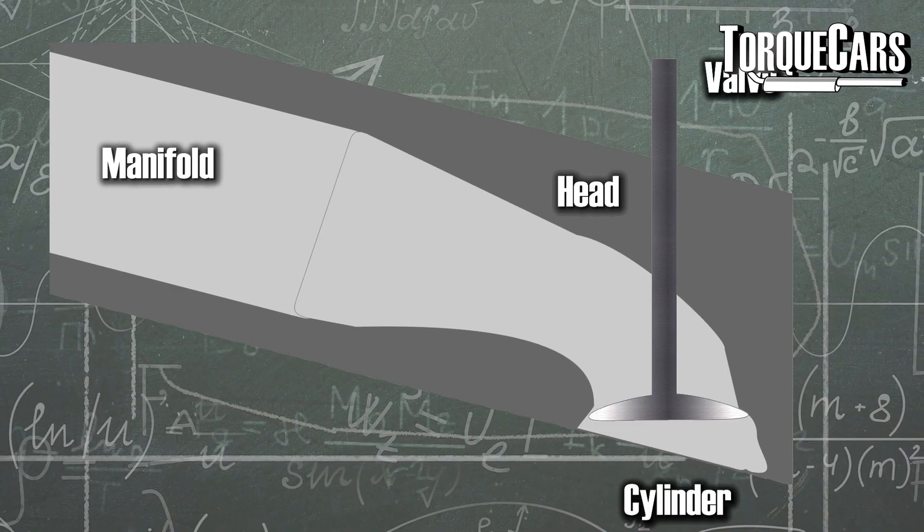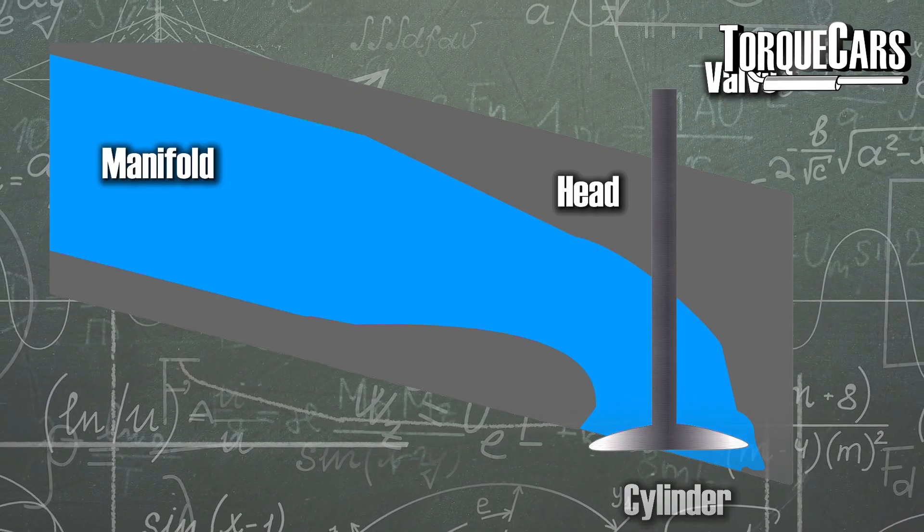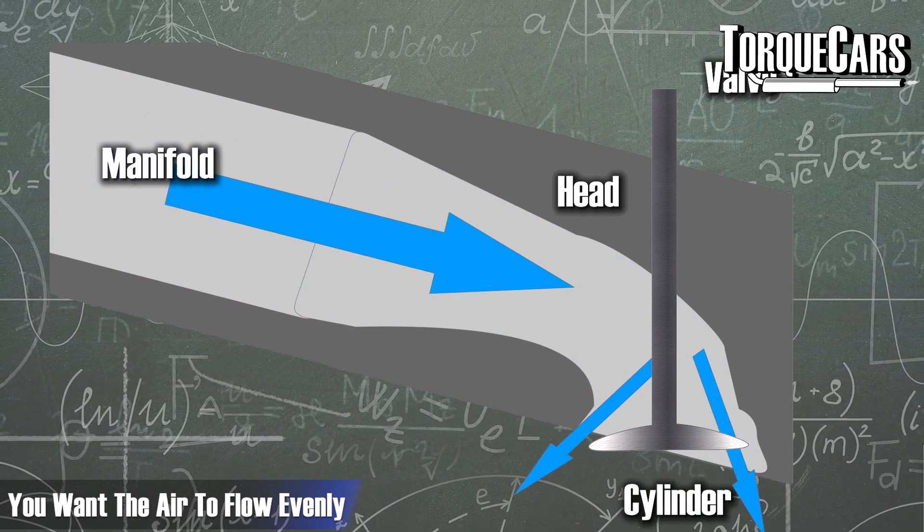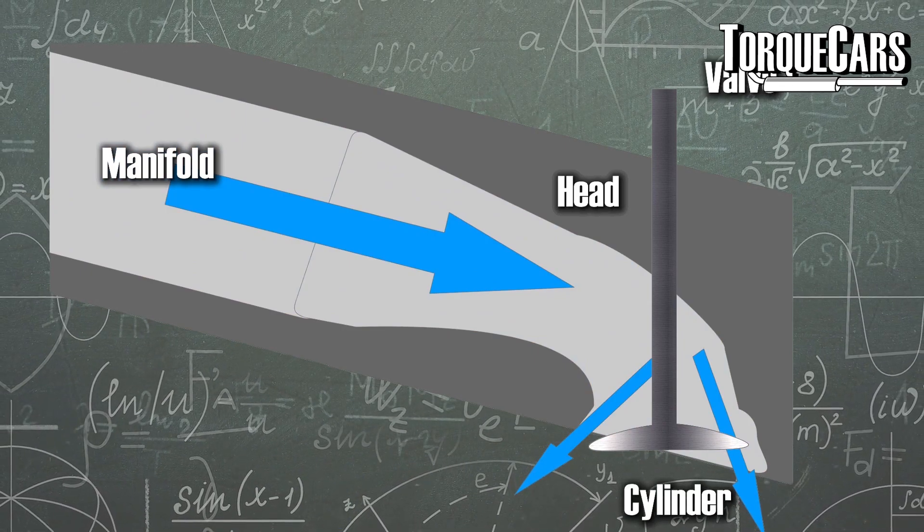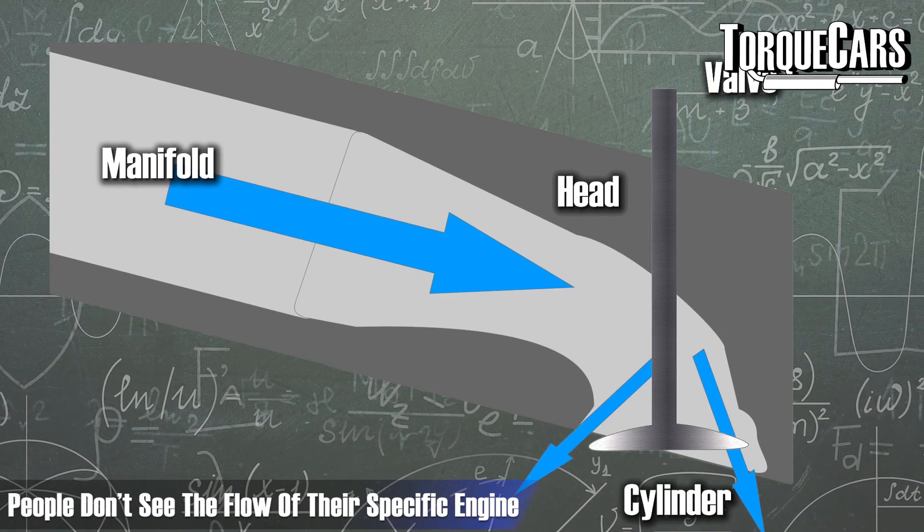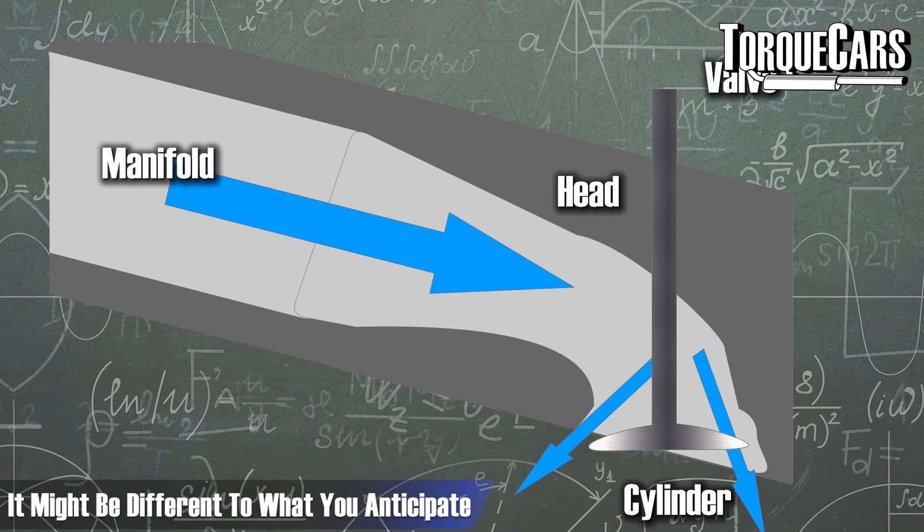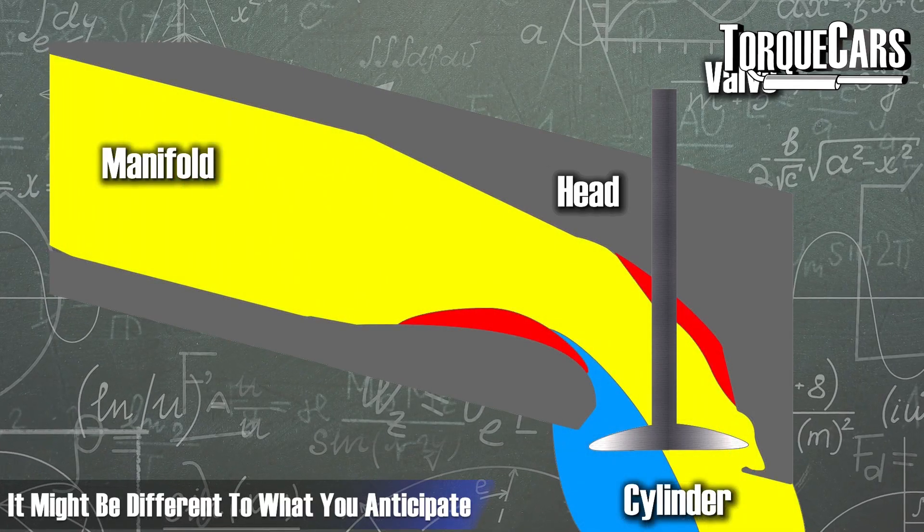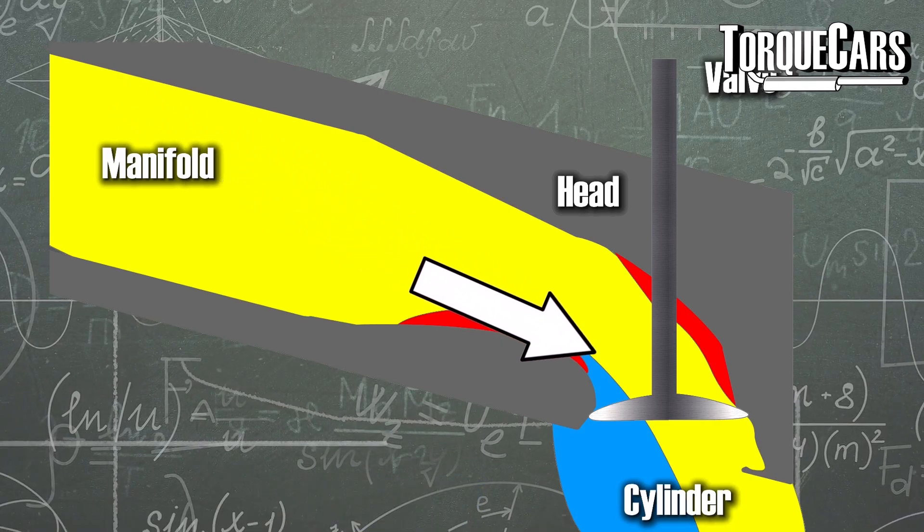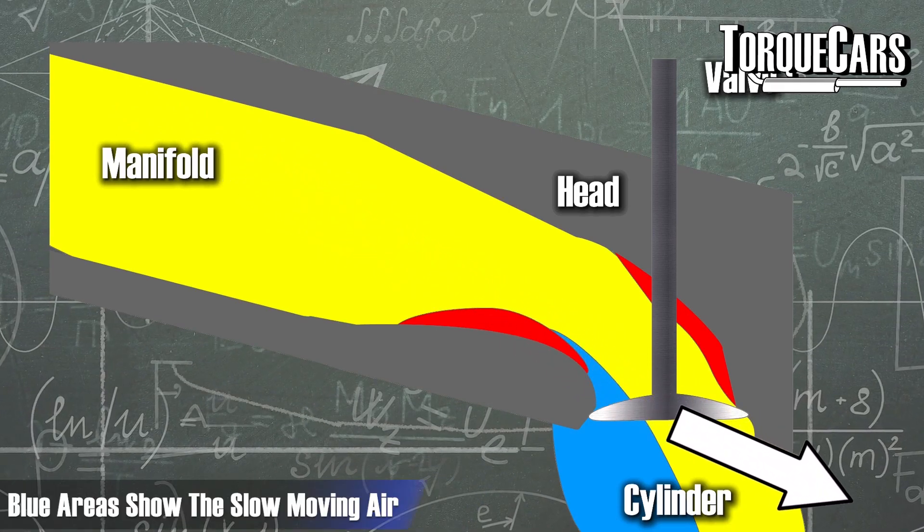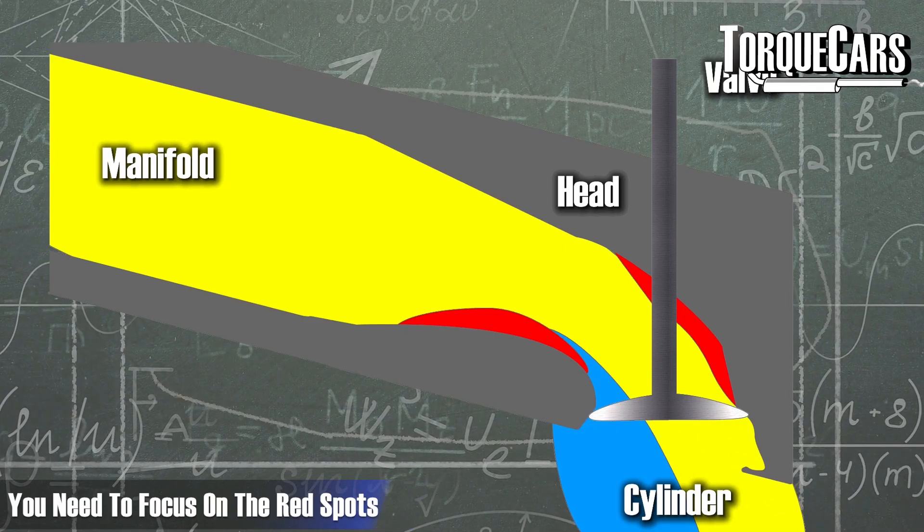You might assume that the air flows evenly around the valves into the engine, and that is a common misconception. A lot of people don't actually look at the way their specific engine and head flows, and in most cases it's somewhat different to what you might anticipate. The yellow shows a channel here of the air's direct path and it goes across into the engine. You've got some blue areas there which show the slow moving air, and the red dots show where you should focus your primary attention on smoothing out the path the air takes into the cylinders.